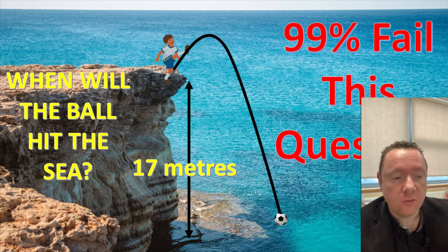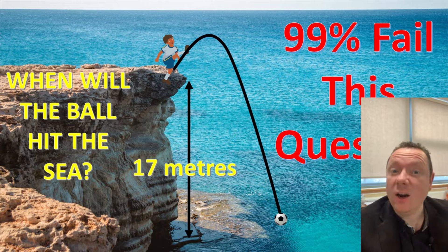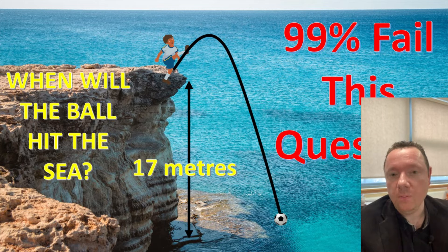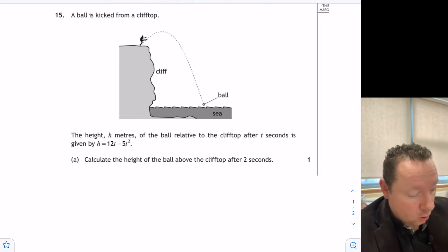It's a bit of a strange one. As I look at this to see how we solved it, it's an unfamiliar context, which is what makes it difficult. Here's the actual question: a ball is kicked from a cliff top and its height is given by the equation h = 12t - 5t². Part A: calculate the height of the ball above the cliff top after two seconds. Have a look and see if you can solve that.